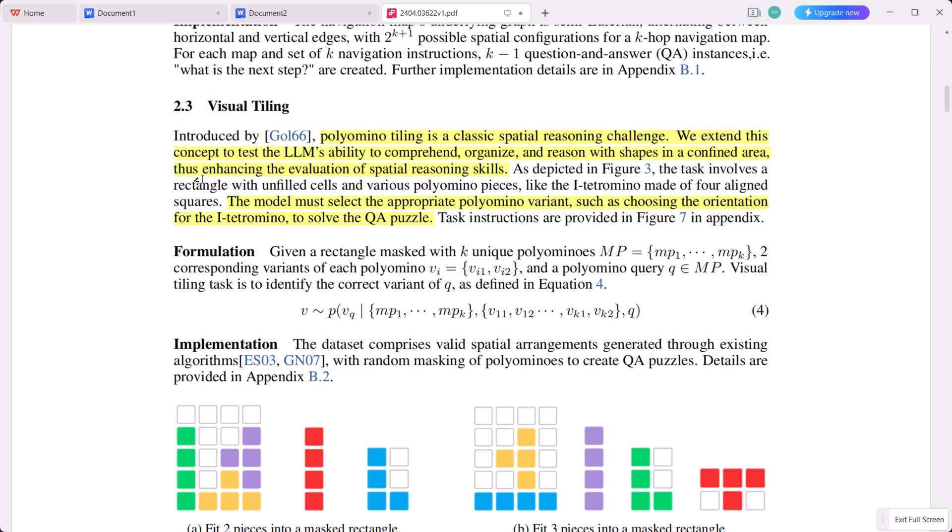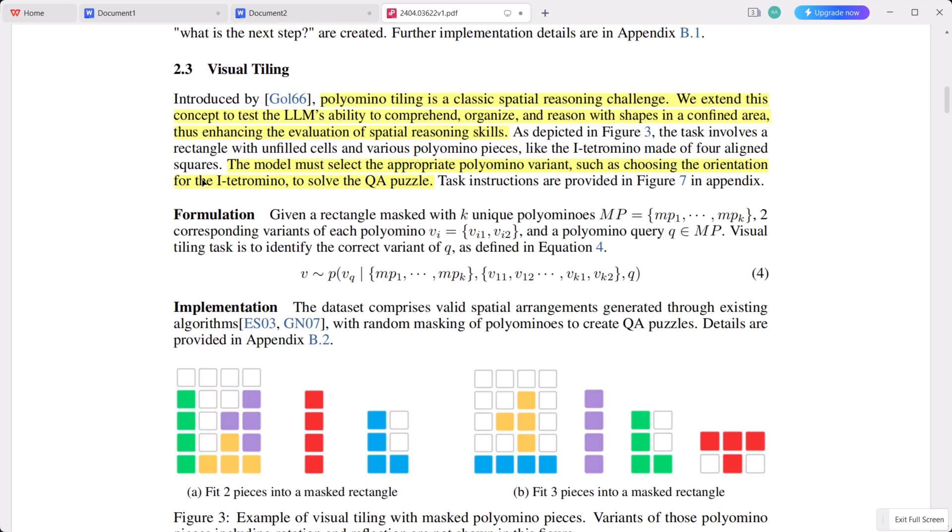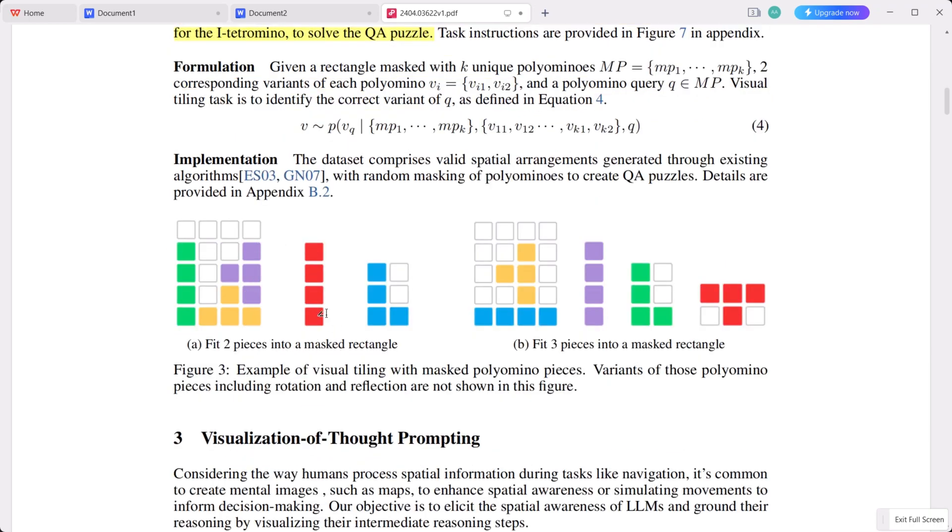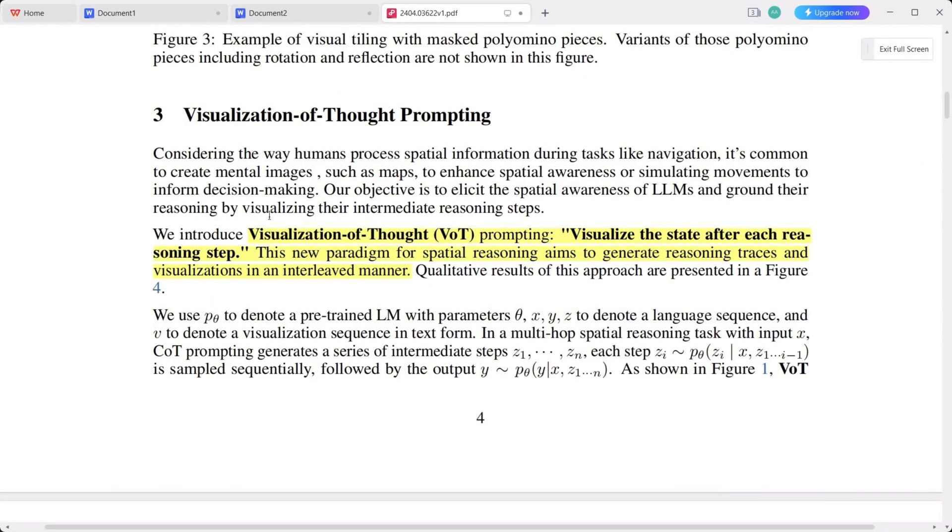Polyomino tiling is a classic test of spatial reasoning. We use it to assess a large language model's ability to understand, organize, and reason with shapes within a limited space. Essentially, you're given a grid populated with various shapes and colors, and your task is to find a spot for a new object. Now, a crucial aspect of visualization of thought prompting is the visualization at each step, similar to chain-of-thought prompting. Instead of solving a problem in one go, it involves tracing the path step-by-step. This new approach to spatial reasoning is designed to produce interleaved reasoning traces and visualizations, enhancing our understanding at each stage of the process.